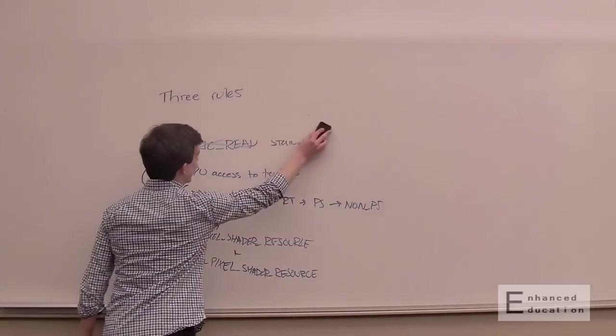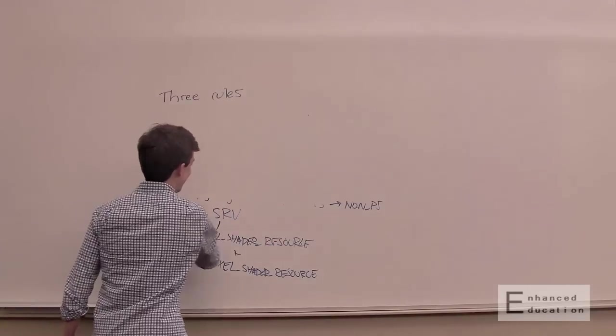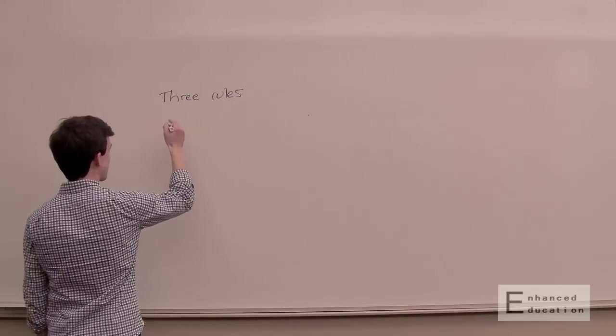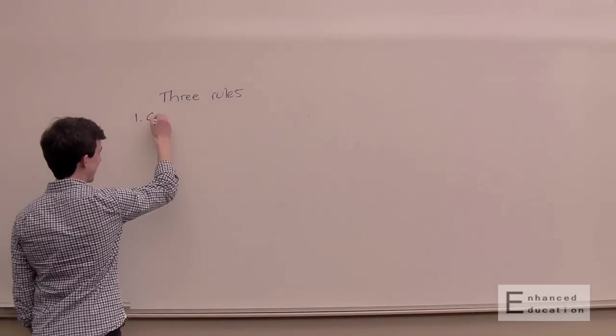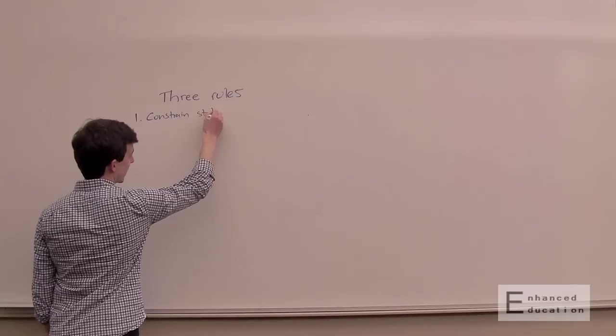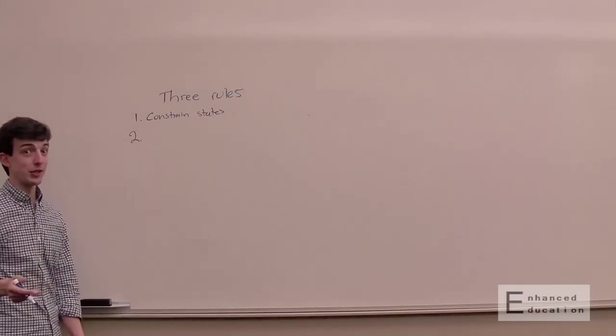And that's kind of a corollary to the generic read, staying away from generic read. That's why this only counts as one rule. All right. So I guess we'll leave this one written. Constrain states. The second one, avoid unneeded transitions.